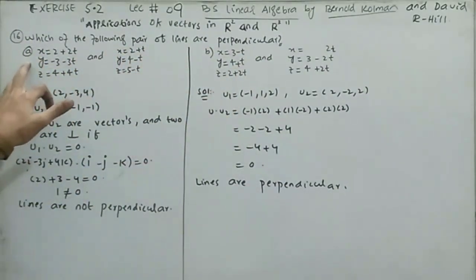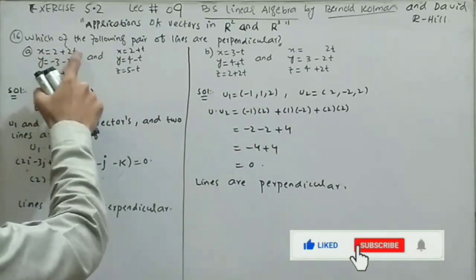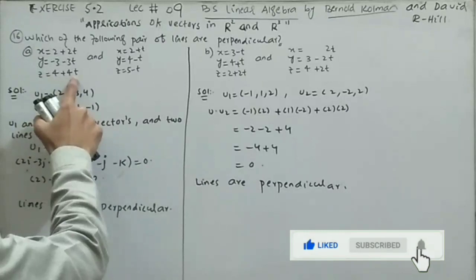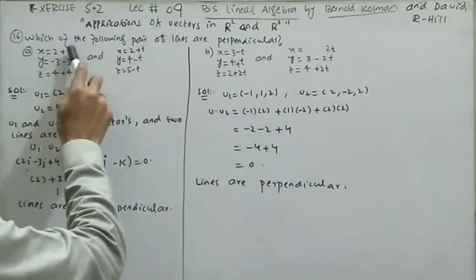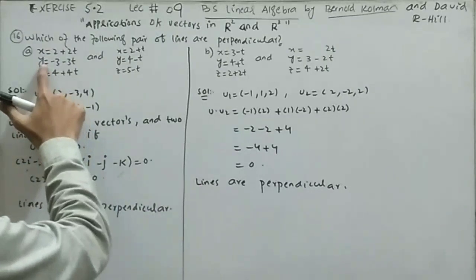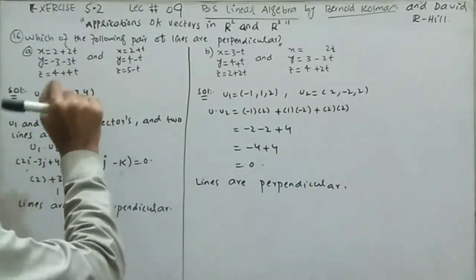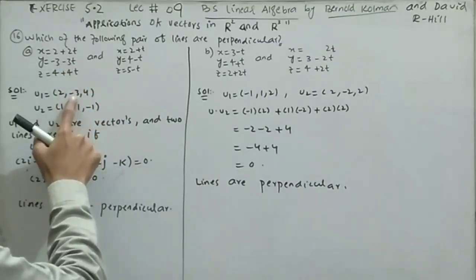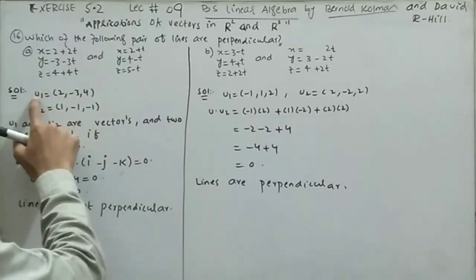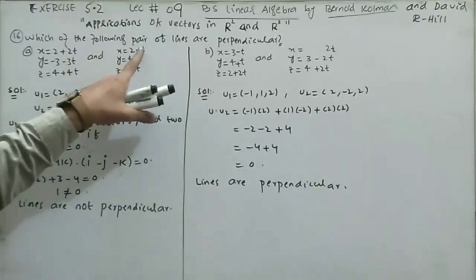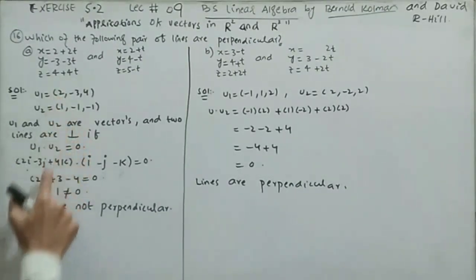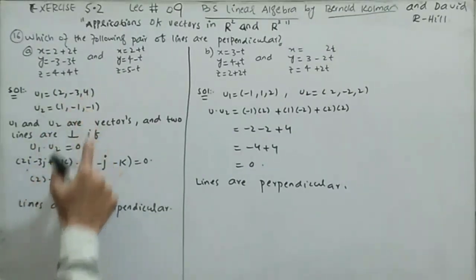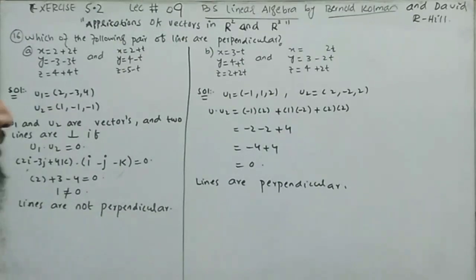Question 16: which of the following pairs of lines are perpendicular? Part (a): x = 2 + 2t, y = -3 - 3t, z = 4 + 4t and x = 2 + t, y = 4 - t, z = 5 - t. The direction vectors are u₁ = (2, -3, 4) and u₂ = (1, -1, -1). The dot product is 2(1) + (-3)(-1) + 4(-1) = 2 + 3 - 4 = 1 ≠ 0, so these lines are not perpendicular.